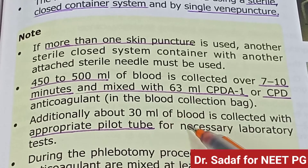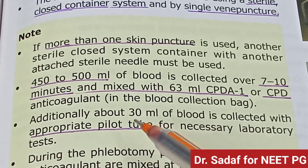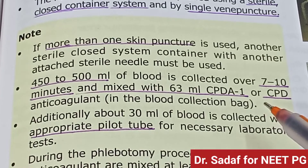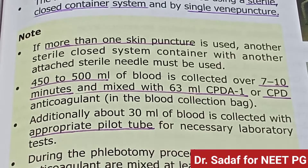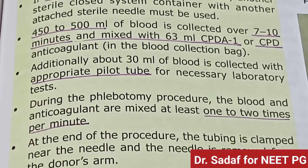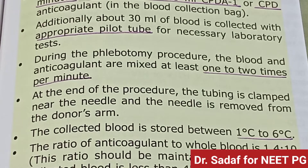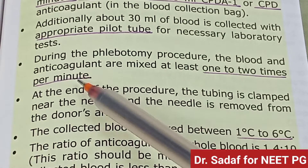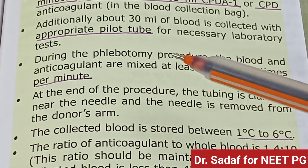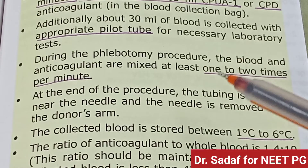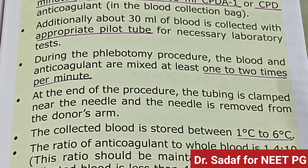The blood is mixed with 63 ml of CPD-A1 or CPD anticoagulant. Additionally, 30 ml of blood is taken into appropriate pilot tubes for necessary laboratory tests, including compatibility testing. During the phlebotomy procedure, the blood and anticoagulant are mixed at least 1 to 2 times per minute.